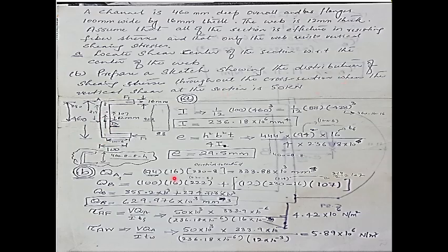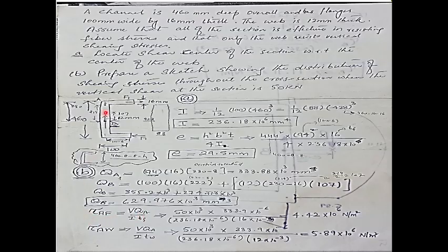The shear stress formula is τ = VQ / It. The variable Q is the first moment of area. We calculate Q separately for the flanges and for the web. When treating the web, we combine the contributions of the flange and the web together.